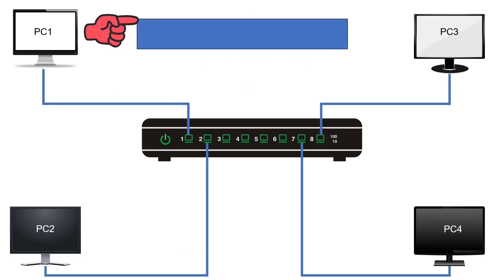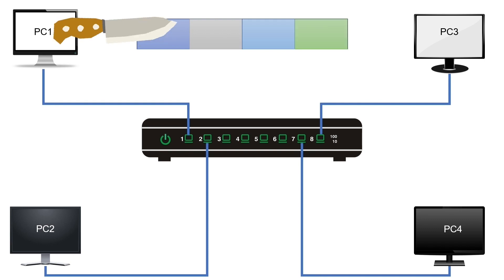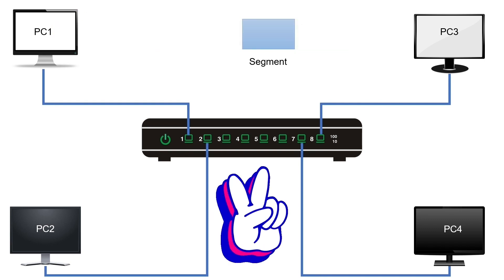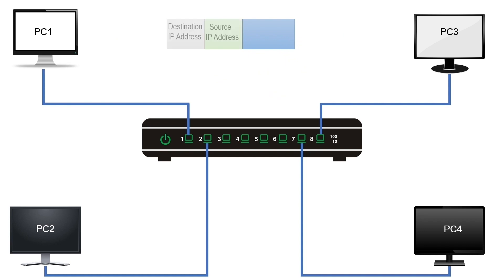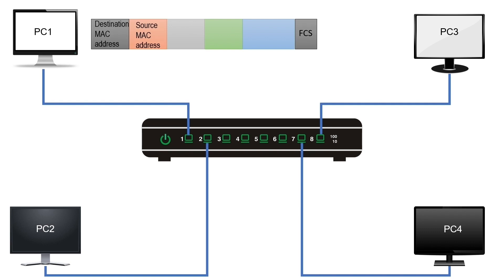When a PC wants to send a data stream, it breaks the data stream into small pieces known as segments. There are two types of addresses: software addresses and hardware addresses. The device needs to attach both types of addresses to each segment. It first adds software addresses, also known as IP addresses. A segment with IP addresses is known as a packet. After adding the software addresses, the device attaches the hardware addresses, also known as MAC addresses. A packet with MAC addresses is known as a frame. A switch understands and uses only hardware addresses to process frames.